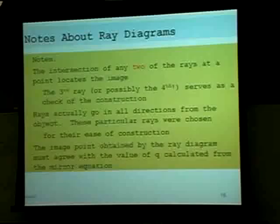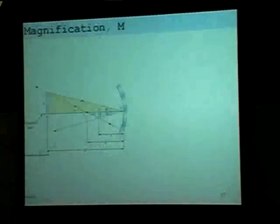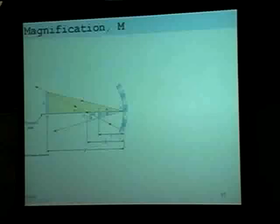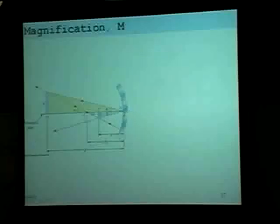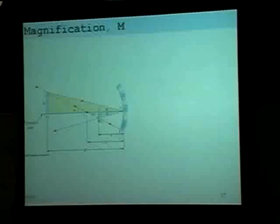We need two rays to intersect in order to locate the image of an object. A third or fourth ray serves as a check of the construction. Rays actually go in all directions from the object, but we choose these because they're easiest to construct. The image point from the ray diagram must agree with the value of Q calculated from the mirror equation.